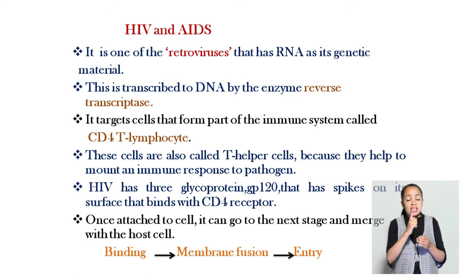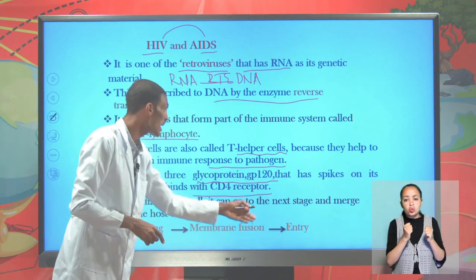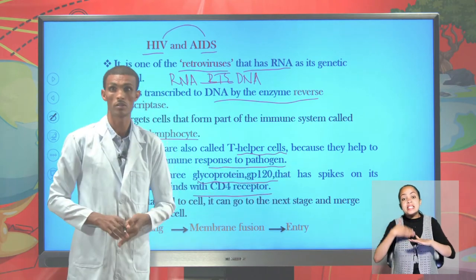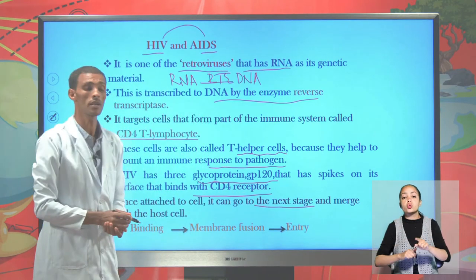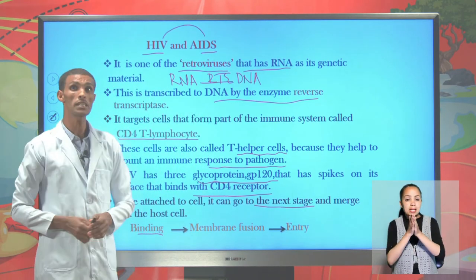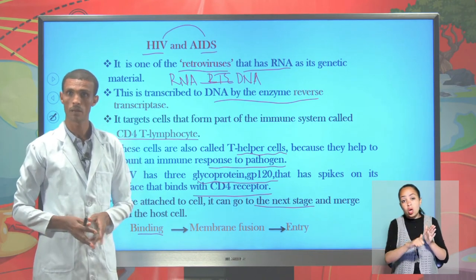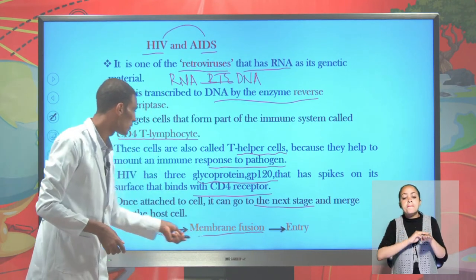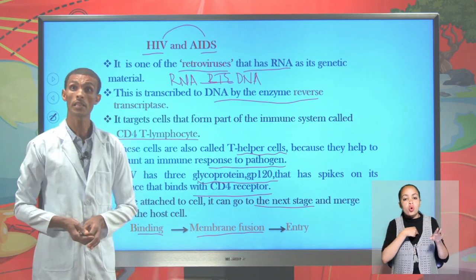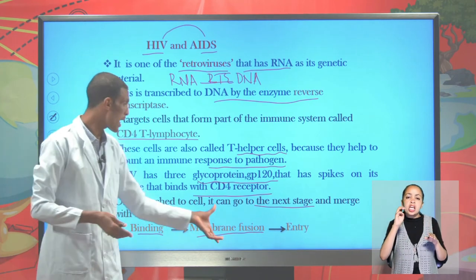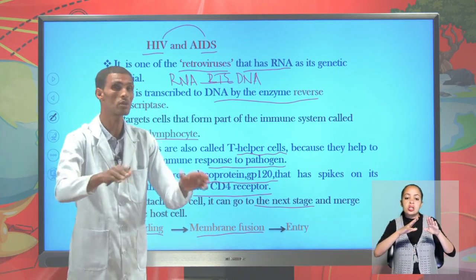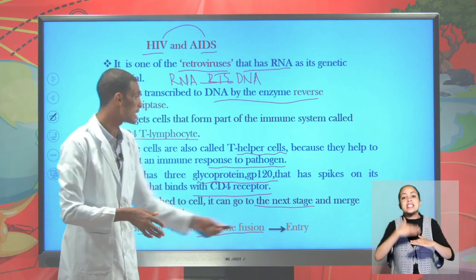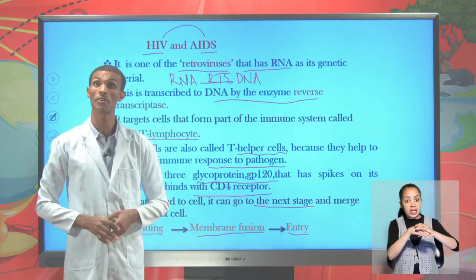Once this virus becomes bound to the CD4 receptor, it can proceed to the next stage of the cycle. The stages are: binding or attachment to the host, then membrane fusion — which we call endocytosis entry — by which they fuse the membrane to proceed to the next stage, and then the entry or integration phase.